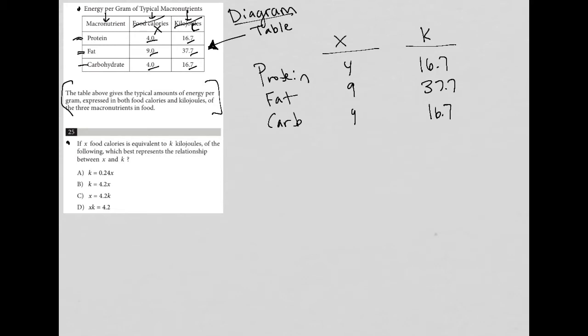We're going to do something I call plug in - plug in information from the question. Choice A says that K equals 0.24X. I can test out the first row for protein. The K value for protein is 16.7. Is it true that 16.7 equals 0.24 times the X value for protein, which is 4? No, 16.7 does not equal 0.24 times 4. Answer choice A is gone.